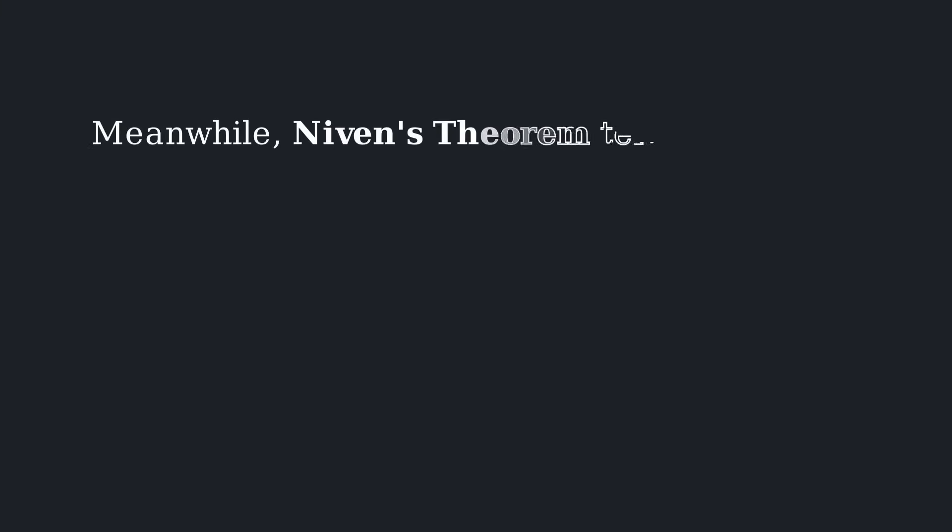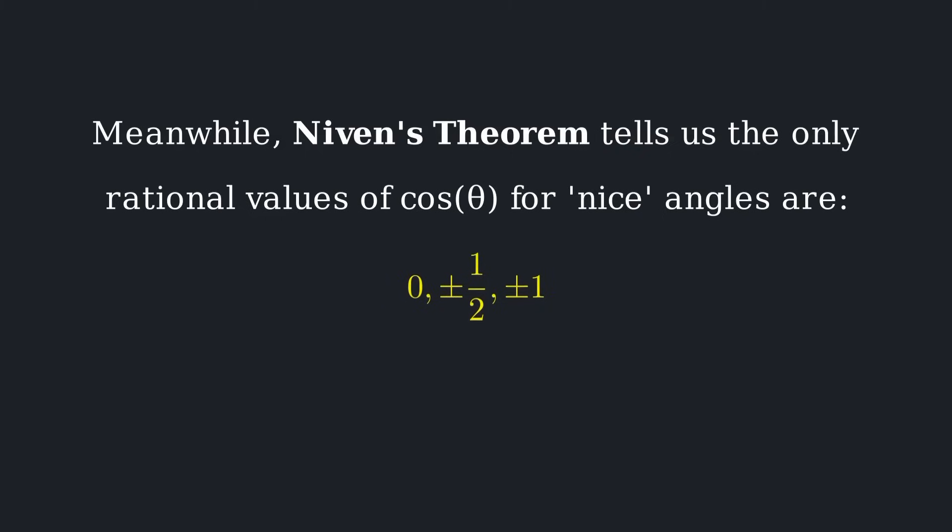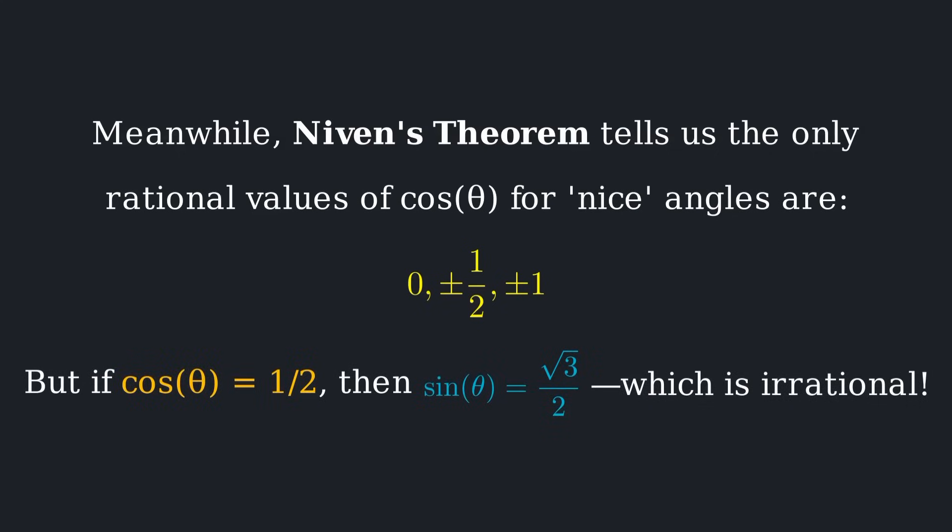Meanwhile, Neven's theorem tells us the only rational values of cosine theta for nice angles are 0, plus or minus 1 half, and plus or minus 1. But if cosine of theta equals 1 half, then sine of theta must equal the square root of 3 over 2, which is irrational.